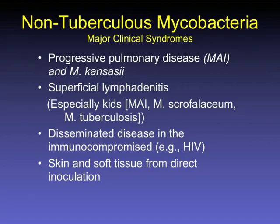What are the major clinical syndromes with NTM infection? You have progressive pulmonary disease — that's what we typically see in patients with COPD or chronic lung disease, where they get fibronodular or cavitary disease. You also get superficial lymphadenitis, which is a little less common, and is sometimes seen in kids with MAI or scrofulosum. Occasionally we see TB lymphadenitis, but that's not an NTM syndrome.